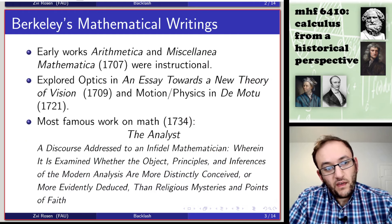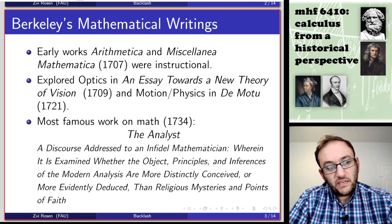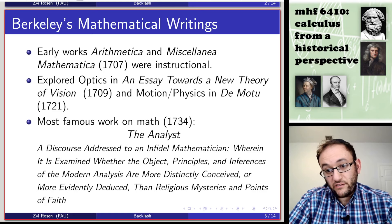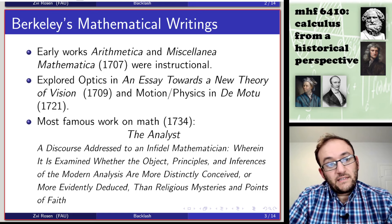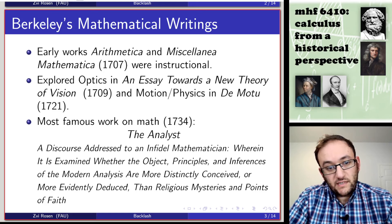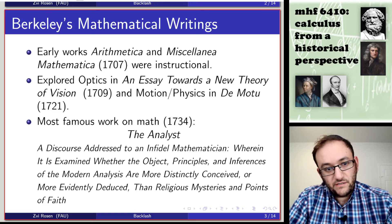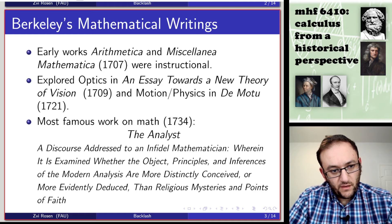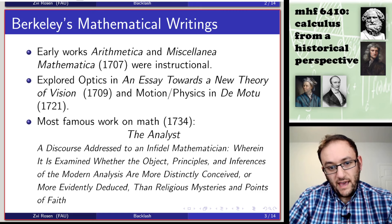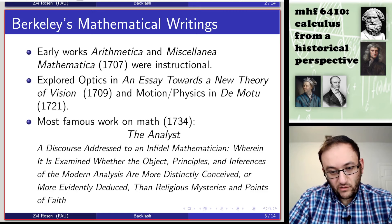Berkeley, besides being a religious leader and a philosopher, he also wrote about mathematics. He wrote a couple of early works in 1707 that were primarily instructional materials to teach students basic math. But he also explored mathematical fields like optics in his essay towards a new theory of vision, as well as motion and physics in a work called De Motu.